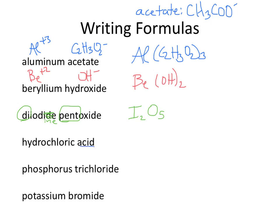We have an acid. This acid is a hydroic acid, which tells me it's just H and something else — only two elements total. The chlor tells me the root is chlorine. Since hydrogen is plus 1 and chlorine is minus 1, it's just HCl.